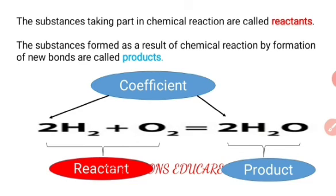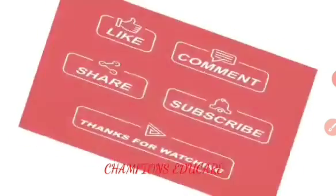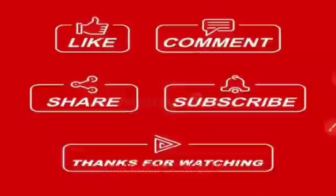To summarize: reactants are the substances taking part in a chemical reaction, and products are the substances formed as a result of a chemical reaction by the formation of new bonds. An easy way to remember this is that reactants are always on the left side of the reaction equation, and products are always on the right side. With this our concept is complete. If you liked this video, please like it. If you have any doubts or difficulties, please comment. Share the video and subscribe to the channel. Thanks for watching.